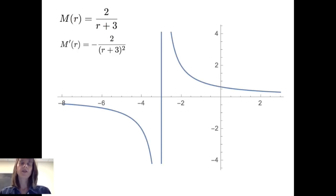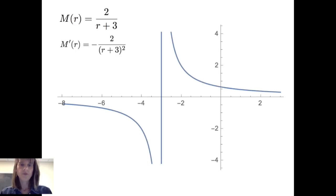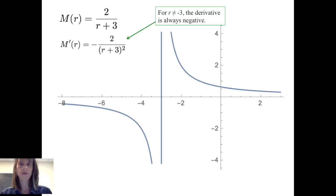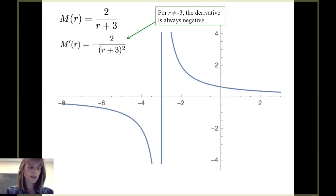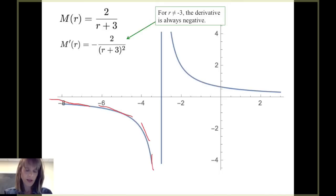Looking at the graph of m evaluated at r, which is 2 divided by r plus 3, the derivative is negative 2 divided by r plus 3 squared. This derivative is always negative as long as r is not equal to negative 3, which makes sense because the derivative tells us the slopes of the tangent lines, and we can see that the slopes are always negative.